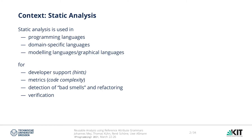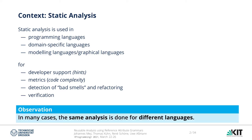Static analysis can be applied to many different languages. This includes, besides general-purpose languages such as Java and C++, domain-specific and modeling languages. In all of these, analysis can provide developer support such as hints and code refactoring, but also metrics or even validation. Both when programming and designing DSLs, we use and specify static analysis for these purposes, and we made one observation: in many cases, the same analysis is done for different languages. So we started thinking about how we can write static analysis that is reusable.